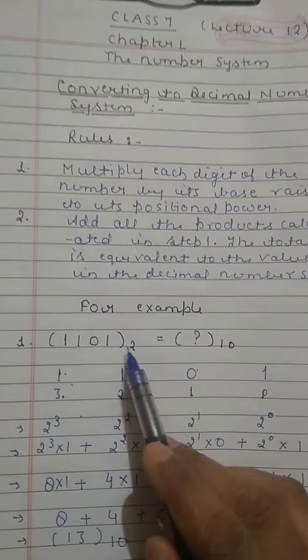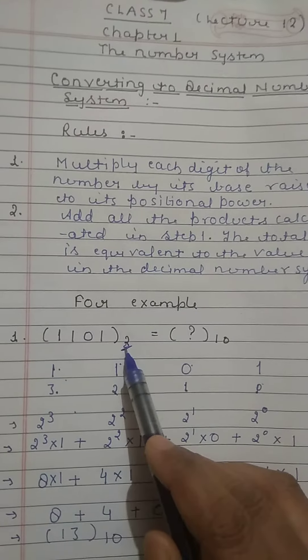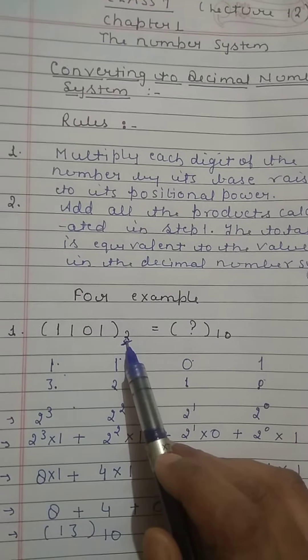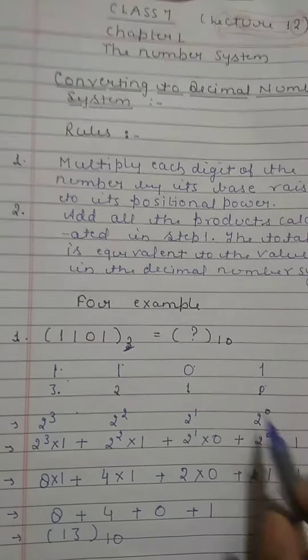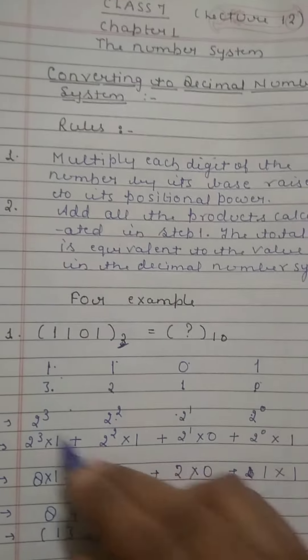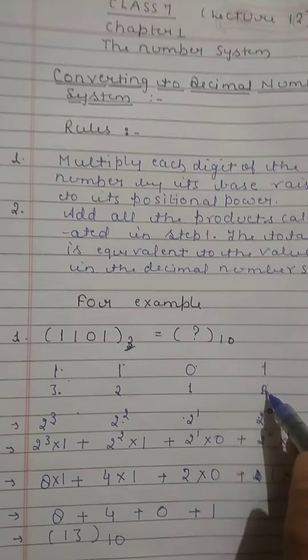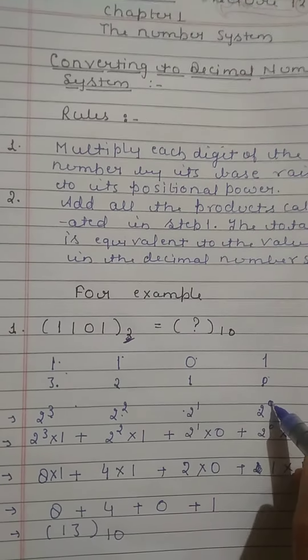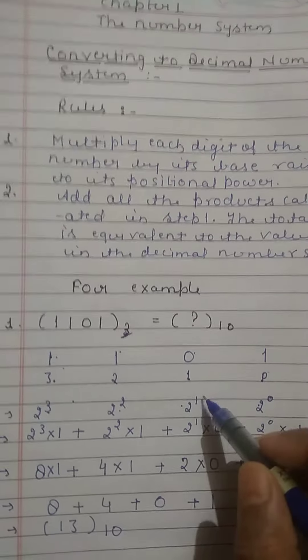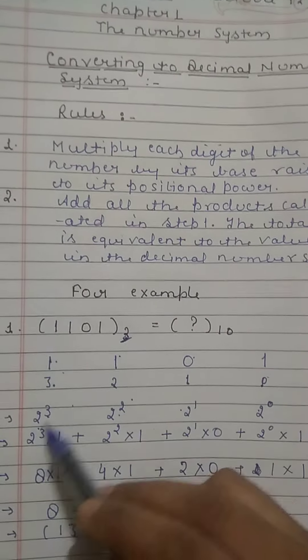After that we will take the base of the binary number system. The base of the binary number system is 2. So we will take the 2 at all places and now we will take the powers: 2 to the power 0, 2 to the power 1, 2 to the power 2, 2 to the power 3.